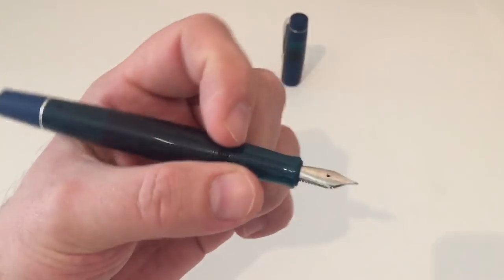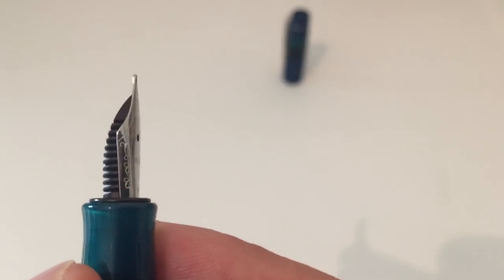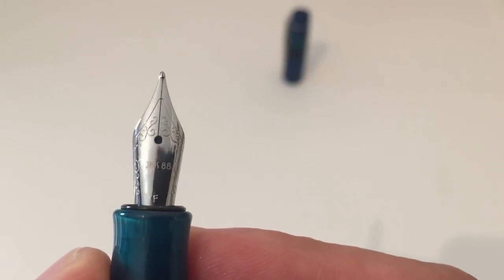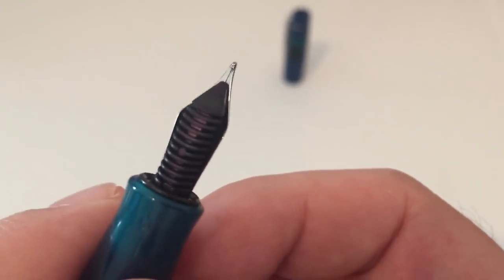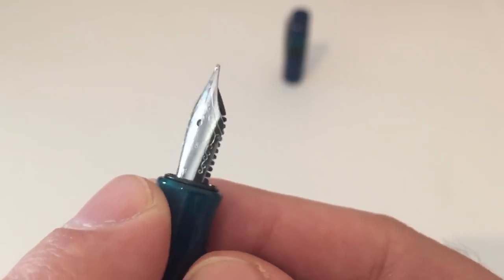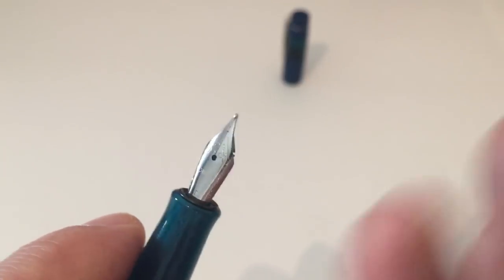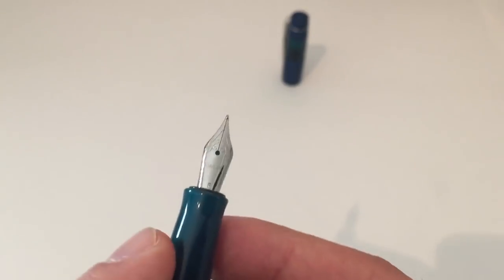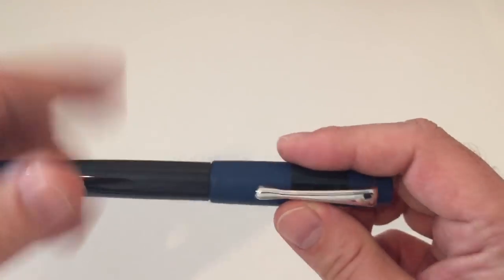We have a number 5 nib here, comes in fine, medium and broad. I have the fine here, some scrollwork, breather hole, saying Opus 88, supposedly made by a German nib manufacturer of which I'm not exactly aware. The nib writes flawlessly. It's a true-to-size fine, very nice fine line, very smooth writing experience. Feels almost slightly over-polished but not yet exactly. It's a very nice butter-on-glass smooth feeling, no feedback whatsoever.